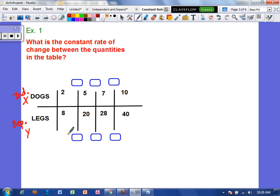So we are going to find the change in y. So we want to see what's the difference between each of these values. So if we are going from 8 to 20, that is increasing by 12 legs, and we know that because 20 minus 8 is 12. From 20 to 28, it increases by 8 legs, because 28 minus 20 is 8. And then from 28 to 40, that is increasing by 12, because 40 minus 12 is 28. Now we're going to find the difference in x. So 5 minus 2 is 3. 7 minus 5 is 2. And 10 minus 7 is 3.